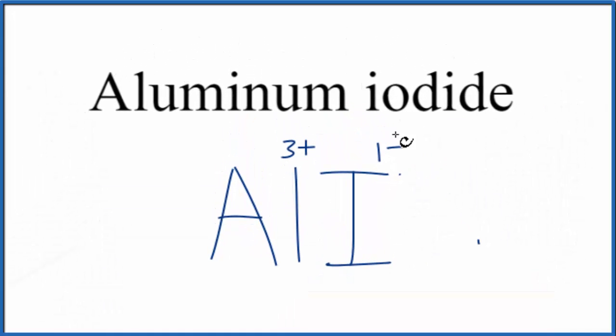To have this all have a net charge of 0, we have a 3+ here. We're going to need 3 of these 1- charges for this to all balance out. So the formula for aluminum iodide is AlI3.